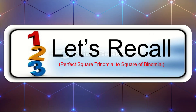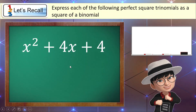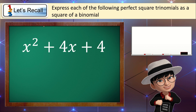Before we proceed with our main topic, let's try to recall first how to convert a perfect square trinomial to a square of binomial. Let's express x squared plus 4x plus 4 as a square of binomial. The first thing we need to do is get the square root of the first term. The square root of x squared is simply x. We copy the sign of our second term, which is positive, and then we get the square root of the last term, which is 2.